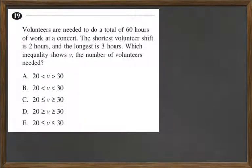Volunteers are needed to do a total of 60 hours of work at a concert. The shortest volunteer shift is 2 hours and the longest is 3 hours. Which inequality shows V, the number of volunteers needed?